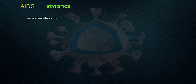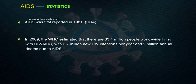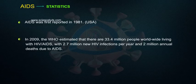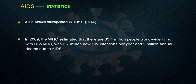Statistics: AIDS was first reported in 1981. In 2009, the WHO estimated that there are 33.4 million people worldwide living with HIV or AIDS, with 2.7 million new HIV infections per year and 2 million annual deaths due to AIDS.